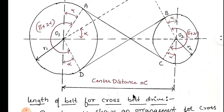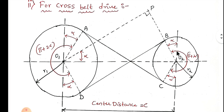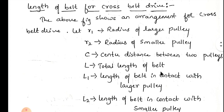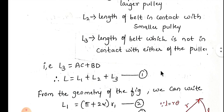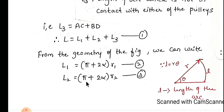Similarly we can calculate L2. We know the angle is π + 2α. Using the arc length formula, multiply the angle by the radius r2. Therefore L2 is equal to r2 multiplied by (π + 2α). This is equation 3. So we now know L1 and L2.